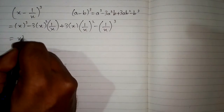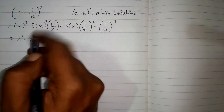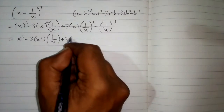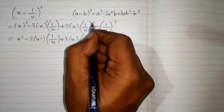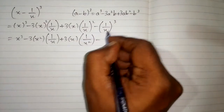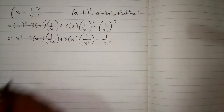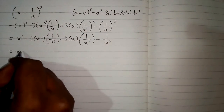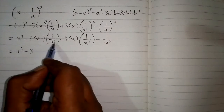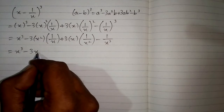The cube of x is x cubed, minus 3 times x squared multiplied by 1 upon x, plus 3 times x multiplied by the square of 1 upon x which is 1 over x squared, minus the cube of 1 upon x which is 1 upon x cubed. Now we have x cubed minus 3, and we subtract the powers of x: 2 minus 1 equals 1.